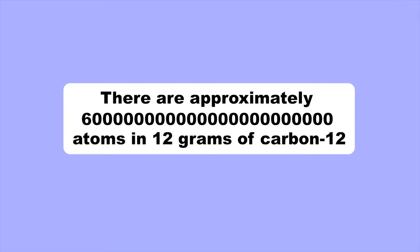That's a very big number. Imagine the number 6 with 23 zeros after it. That's approximately how many atoms there are in 12 grams of carbon-12.